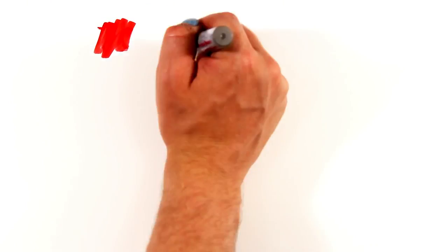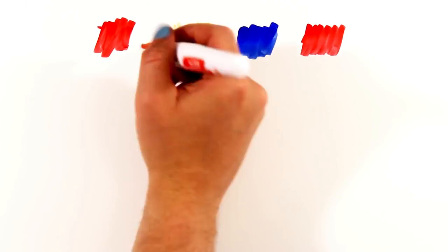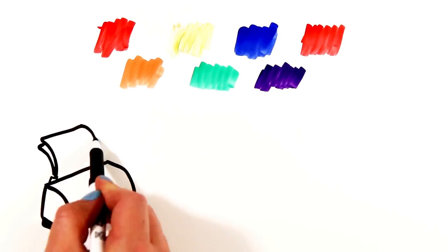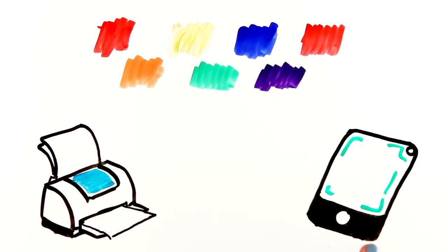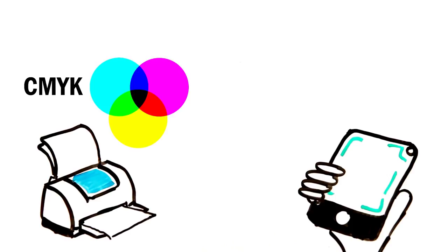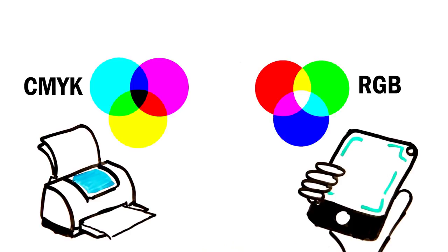Growing up, you likely learned about the primary colors red, yellow, and blue, and their respective complementary colors. But things are more complicated when you consider that the primary colors in your printer are magenta, yellow, and cyan, or that the screen you're watching this on uses red, green, and blue.